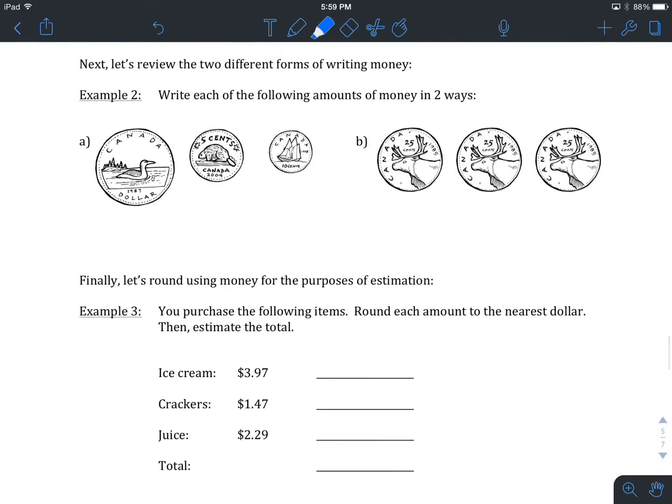The next thing we're going to review is the two different ways that we learned to write money. One is with the dollar sign notation. The second is with cents, or the cent sign, the C with the vertical line through it. In Example 2, we've been asked to write each of the following amounts of money in two different ways. The two ways we're looking for are dollars and cents.